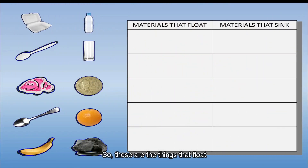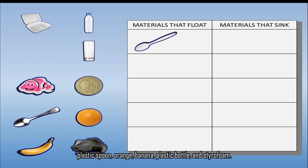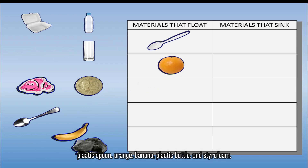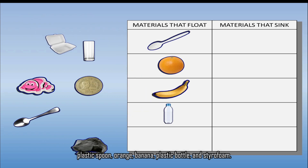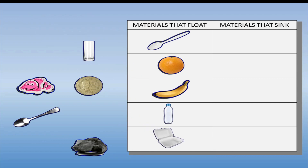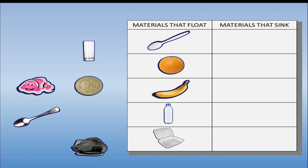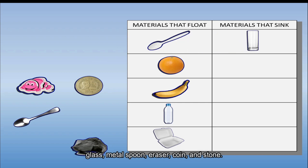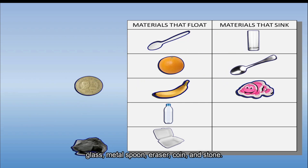So these are the things that float: plastic spoon, orange, banana, plastic bottle, and styrofoam. And these are the things that sink: glass, metal spoon, eraser, coin, and stone.